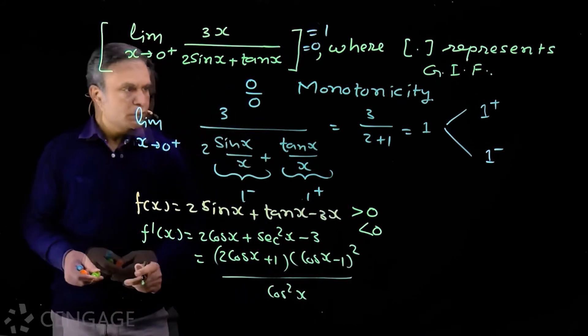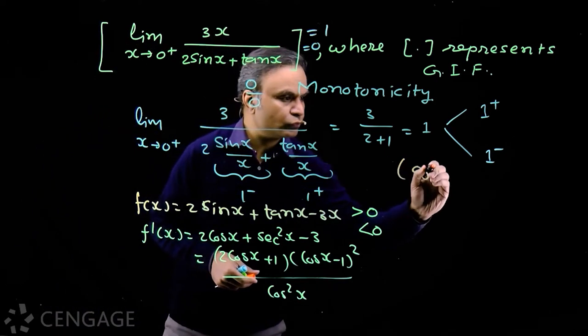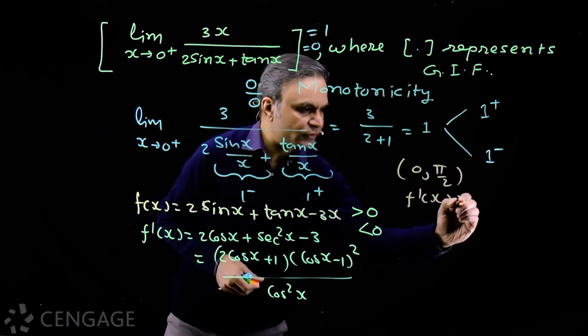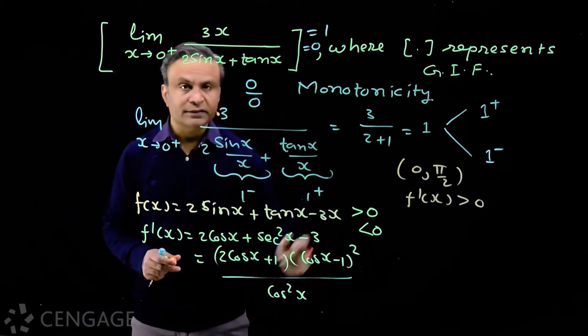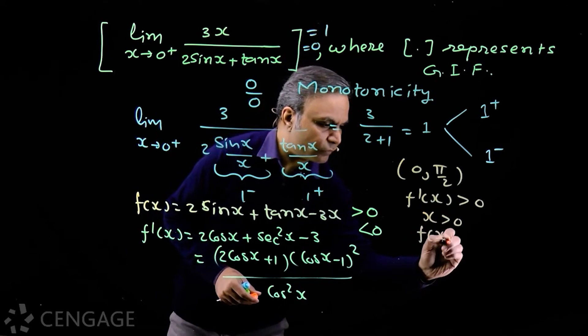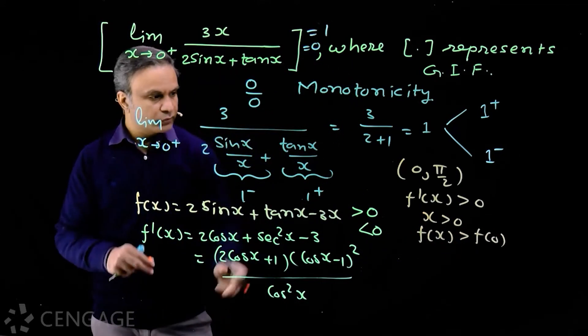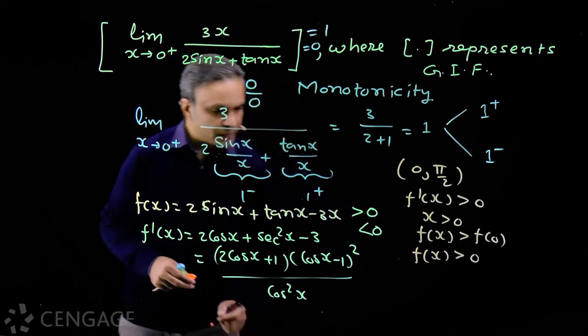Now if we consider one small interval, say 0 to π/2, we find that derivative of function is greater than 0. So function f(x) is increasing in this interval. For x greater than 0, we have f(x) greater than f(0). f(0) is 0, so we find f(x) greater than 0.